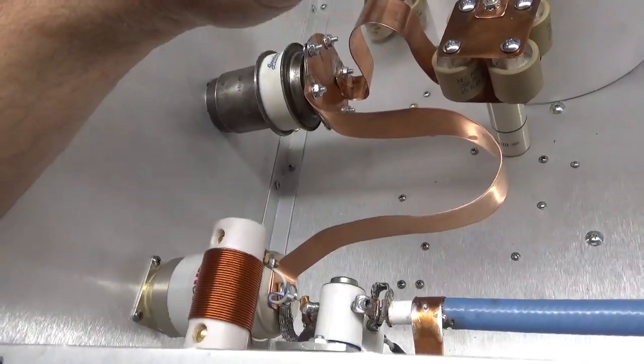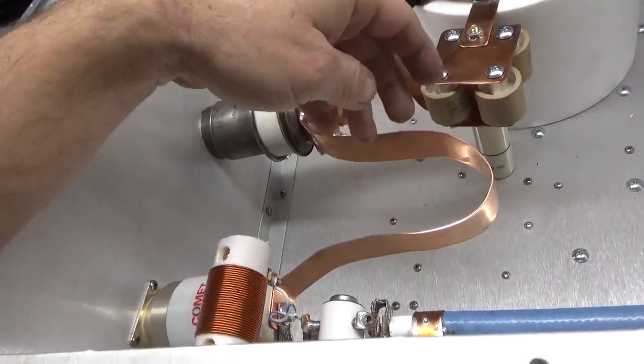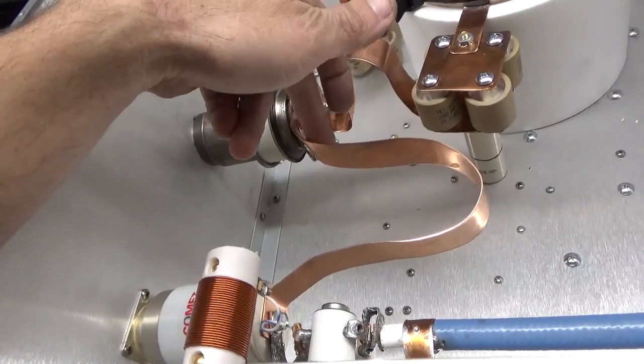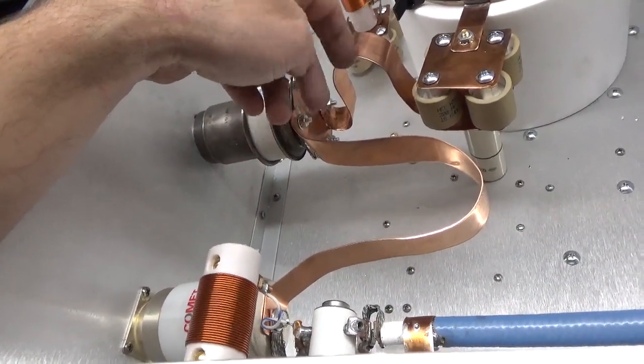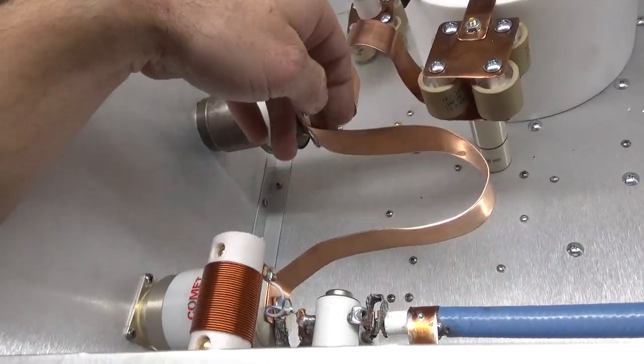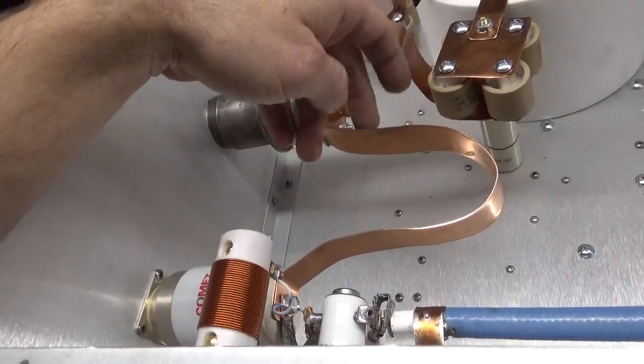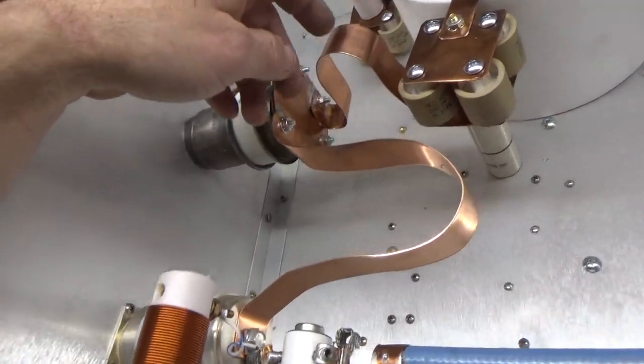So the tubing equivalent, I forget the size of this, but it would be huge. Like huge, huge. Because the RF doesn't ride on the inner surface and the outer surface of the tube. So it does with the strap. So you'd need a huge tube to equal the amount of surface area you get with the strap.